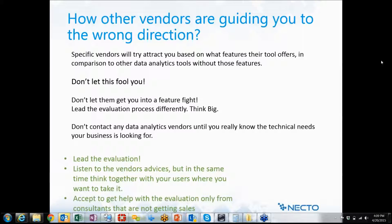What you have to understand is that vendors are trying to tell you about features they are best at and to make you think you need these features. For example, they can tell you that you need to download a desktop solution since it will be better for your end users — but what if your end users have Macs and their desktop solution is Windows only? Or they will tell you it will be a free of charge service, but if you want to share it with other people it will cost thousands of dollars, or even more than $200,000 for a site license.